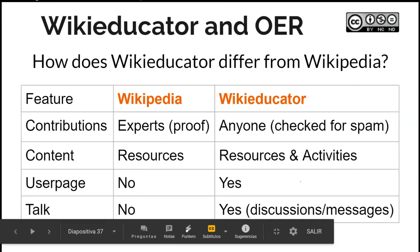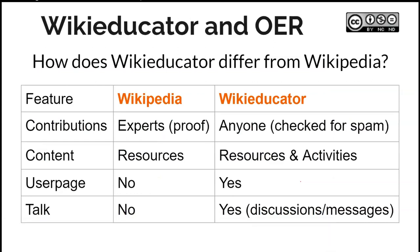So what's the difference between Wikipedia and WikiEducator? The features to compare are contributions, content, user page, and talk. Wikipedia and WikiEducator differ in that the contributions are different. I tried to get a user page on Wikipedia but was thrown out very quickly after a few edits. With Wikipedia, you can't get an account, a user page, or edit anything unless you follow strict protocols — it's really hard to get in.